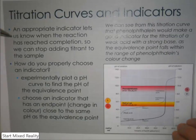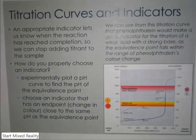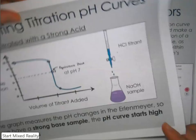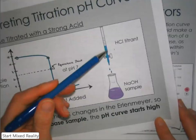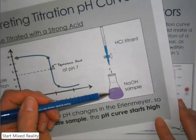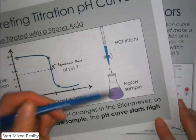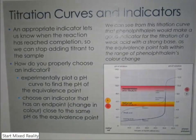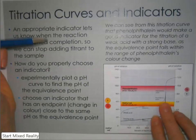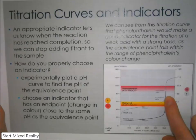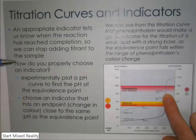The other thing we want to look at is the different types of indicators that we can use for titrations. With an indicator, you have it in the sample already. As you add the base, you start to see the color changing in response to the changing pH. You want to stop adding titrant when the color changes start becoming more permanent — not just flashing and disappearing. We want an indicator that changes color at about the equivalence point.